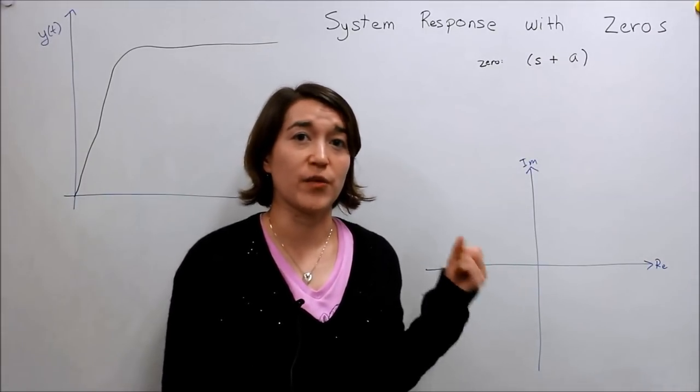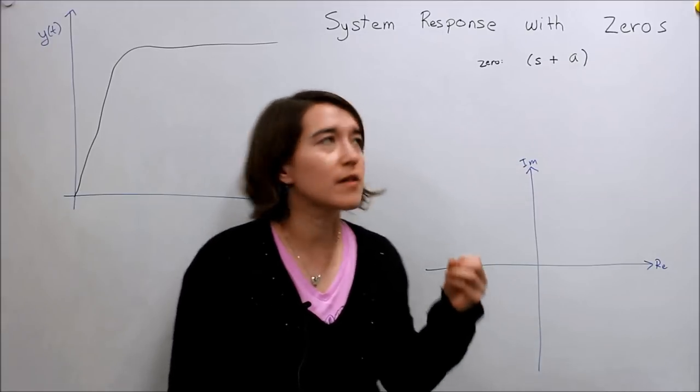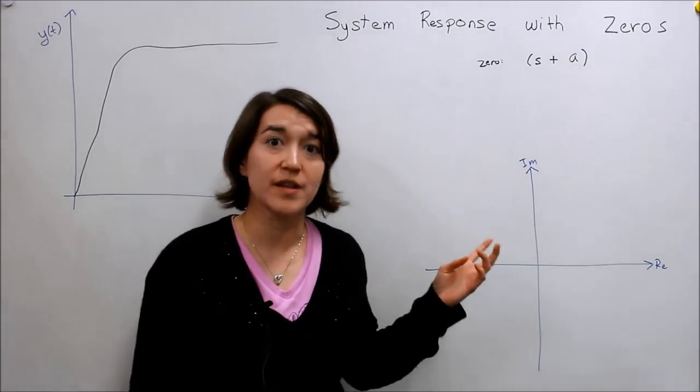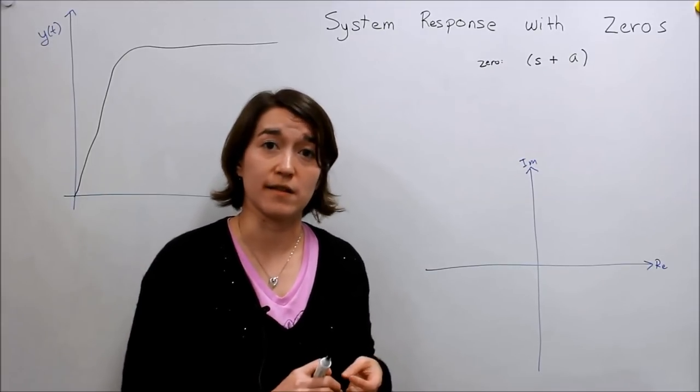Up until this point, we've been focusing on the poles and how they relate to the stability, but I've had some questions about what about the zeros, and so I'm going to cover that briefly to get a sense for how these zeros can affect the system.